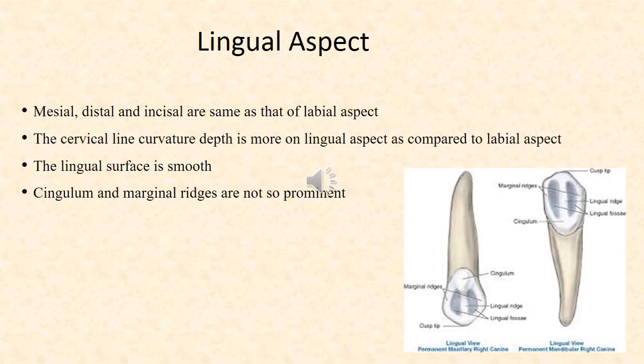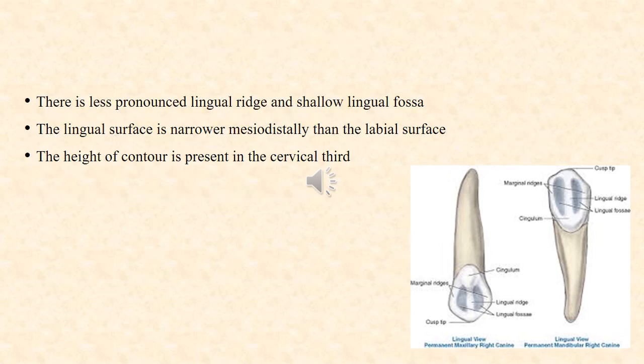Lingual aspect: The mesial, distal, and incisal margins are the same as those of the labial aspect. The cervical line curvature depth is more on the lingual aspect compared to the labial aspect. The lingual surface is smooth. Cingulum and marginal ridges are present but are not prominent. There is a less pronounced lingual ridge and shallow lingual fossa. The lingual surface is narrower mesiodistally than the labial surface. The height of contour on the lingual surface is in the cervical third.